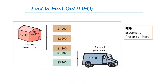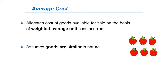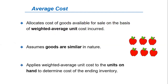Another way of thinking about the calculation of LIFO ending inventory is the FISH assumption, which means 'first in, still here.' The average cost method allocates the cost of goods available for sale on the basis of weighted average unit cost incurred. It also assumes goods are similar in nature. The company applies the weighted average unit cost to the units on hand to determine the cost of the ending inventory.